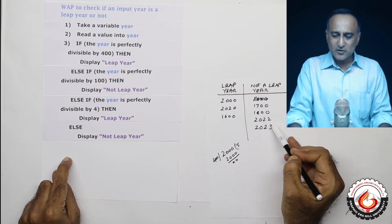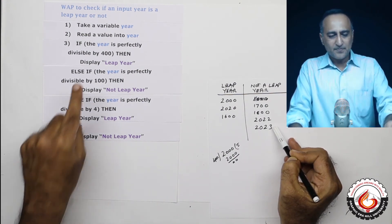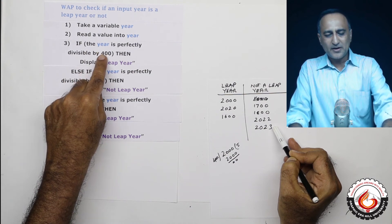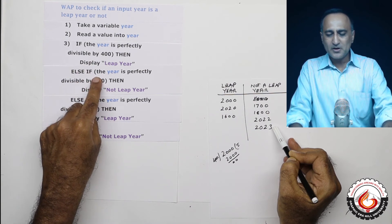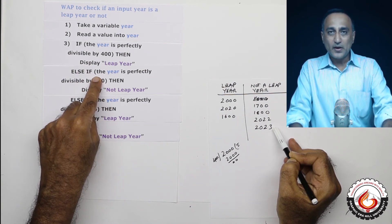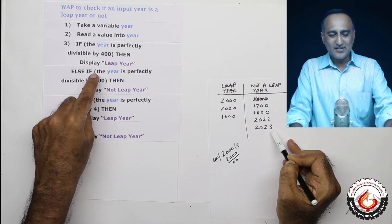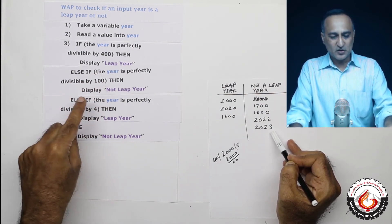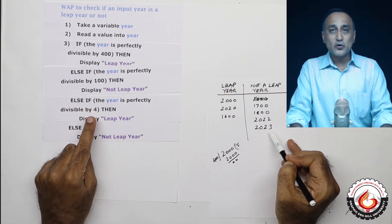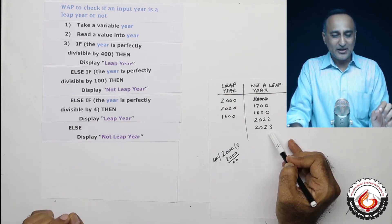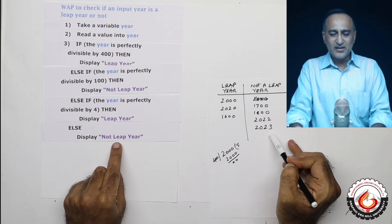Now let's take the year 2023. 2023 divided by 400 gives remainder 23 — condition is false. 2023 divided by 100 gives remainder 23 — also false. 2023 divided by 4 gives remainder 3, which is not 0. So I go to the else part and print 'not a leap year'.